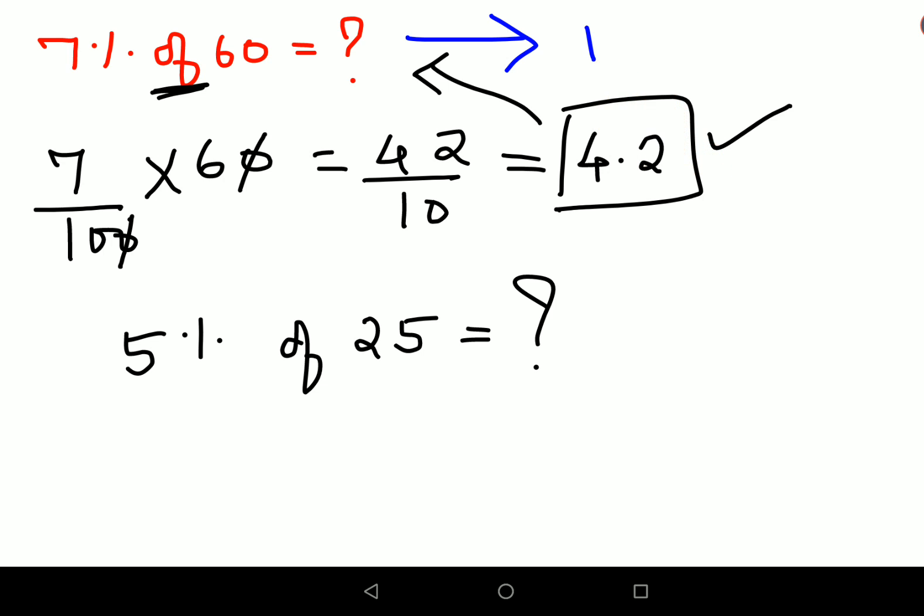I can write 1% of 60 is nothing but what, 0.6. Okay, so therefore 7% of 60 will be 0.6 into 7, that gets you 4.2.